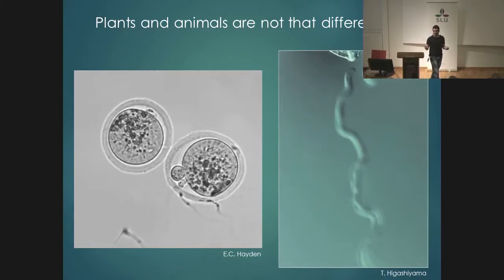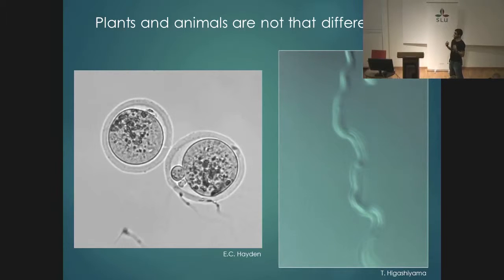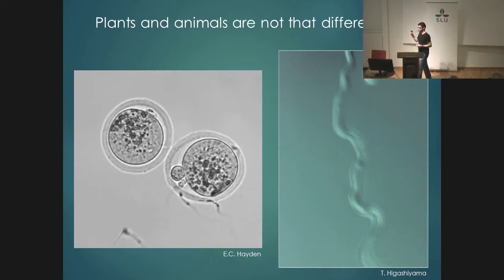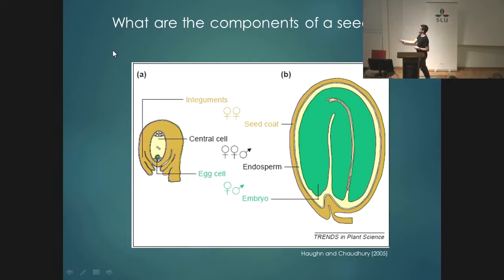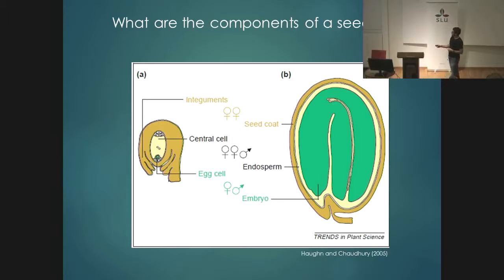In either case, if this fertilization is successful — whenever the sperm gets there — an embryo will be formed. But actually, in flowering plants, the products of fertilization are not only an embryo. Because after the ovule is fertilized by a pollen tube, it forms an embryo, yes, that will form the mature plant in the next generation. But the embryo is surrounded by another tissue, the endosperm, which is a nutritive tissue that works similarly to the mammalian placenta — it can convey nutrients from the mother to the growing embryo.